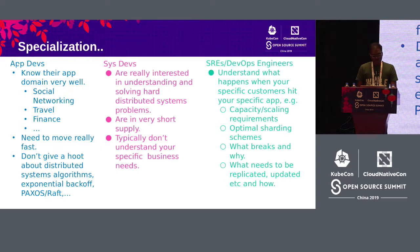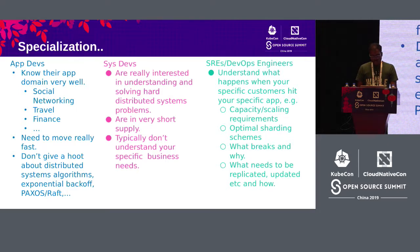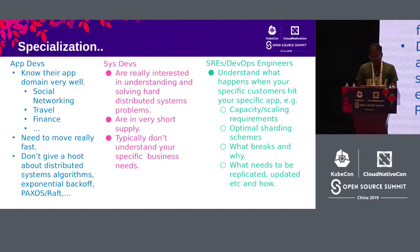Then there are system developers — people who are interested in understanding and solving complex distributed system problems. They are extremely short in supply. Problematically, they don't understand your business needs. And on the right-hand side, we have SREs and DevOps engineers. They understand how your actual application behaves in real life, what happens when a particular customer hits your application, how much capacity you need, what your sharding systems look like, and what breaks and why. They are not necessarily distributed system experts or application domain experts, but they understand how to run systems well.